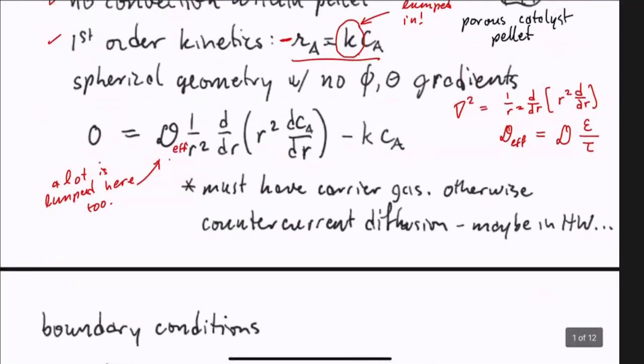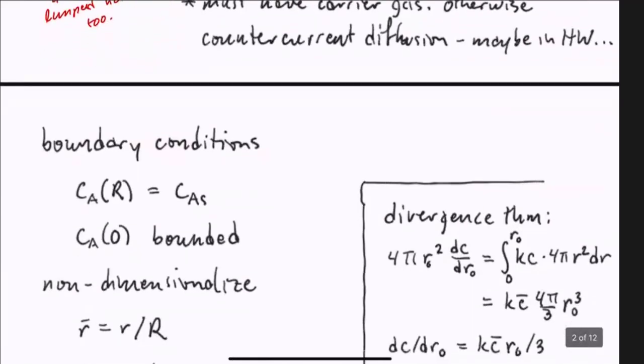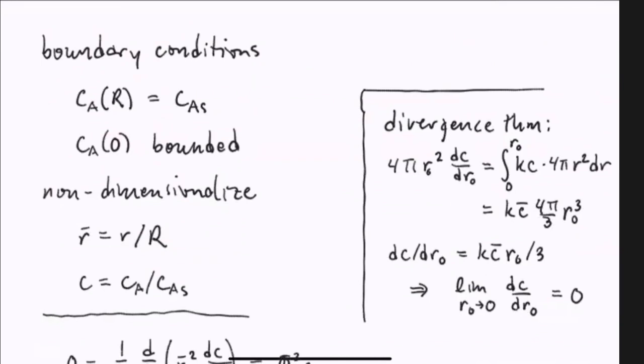Our species balance equation now has become a standard second-order ODE. We need two boundary conditions to solve that. One is that the concentration of A at the surface is given. We also have a boundary condition that says the concentration in the center of the pellet is bounded. The divergence theorem allows us to go from saying the concentration in the interior is bounded, take the limit as the region gets closer to the center, and because whatever is generated at steady state must be coming out, we can relate that to the flux, and you see that the derivative has to tend toward zero.